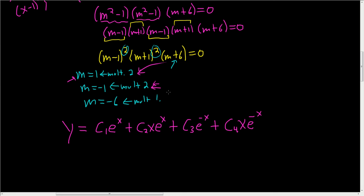And if the multiplicity was 3, the next term would be c5, x squared, e to the negative x. And if the multiplicity was 4, we would also have to add c6, x cubed, e to the negative x, etc.